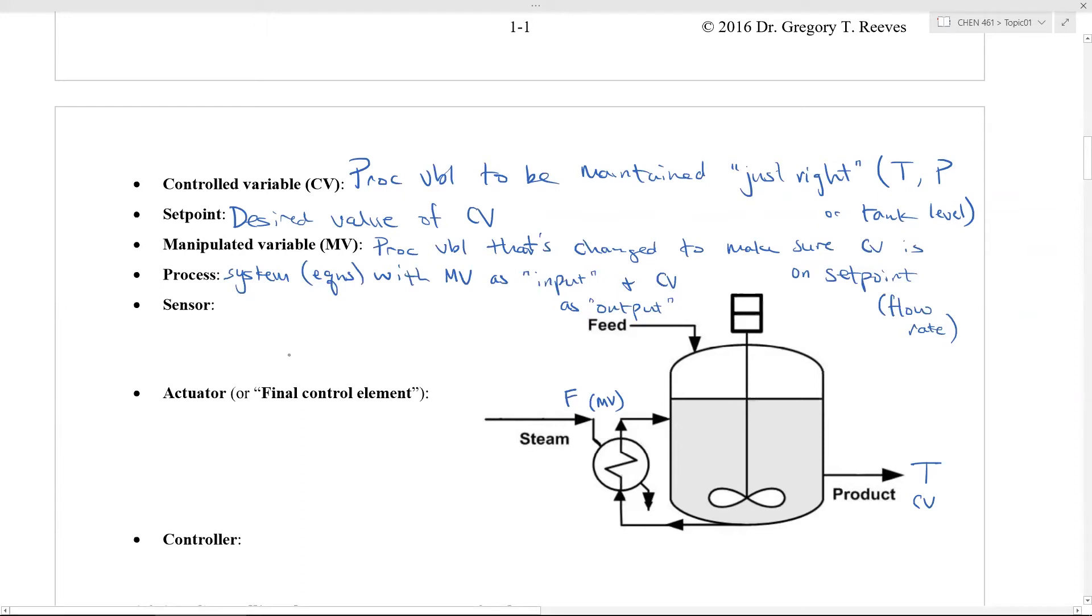What else? Sensor. The sensor is super important because that measures the value of your controlled variable. So how will your system know that your controlled variable is not on set point unless the controlled variable is being measured? So you have some sort of temperature sensor which gets placed on the product stream and that will tell you what your temperature is. So that's your sensor. I'm going to put a little S here for sensor.